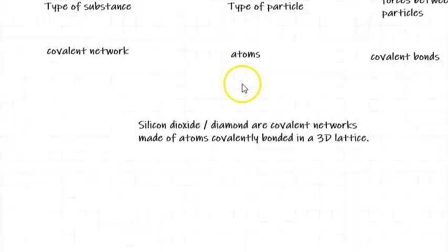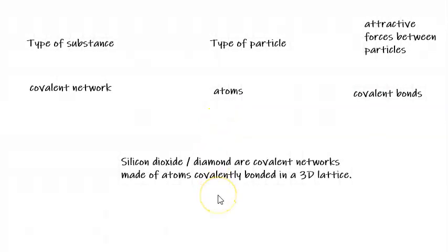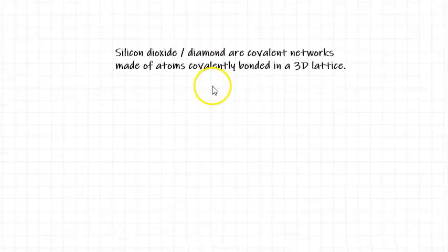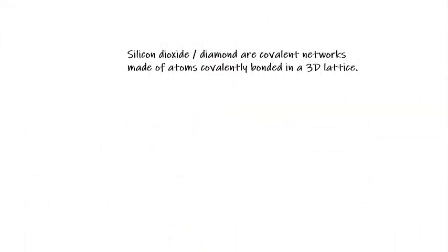What we need to do is we need to use this knowledge of structure and bonding to be able to describe different properties for 3D covalent networks. The first property we'll look at is solubility.